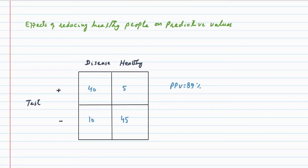We can see in this example that fewer healthy people in a group leads to increased prevalence of the condition in the group, which will result in a better positive predictive value. This can be achieved by performing screening tests on high-risk populations and performing diagnostic tests with careful selection of patients. This will lead to increased prevalence of the condition in the group, resulting in a better positive predictive value.